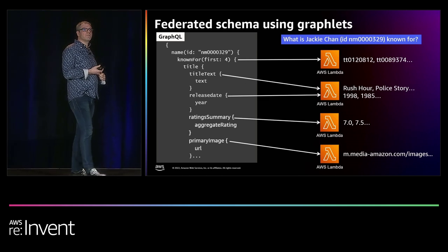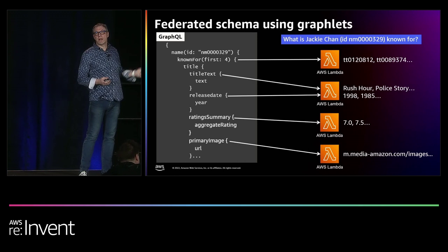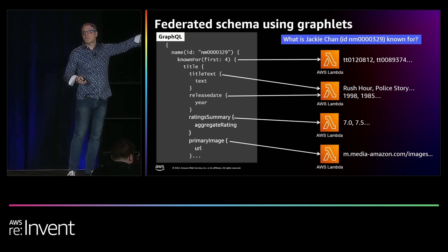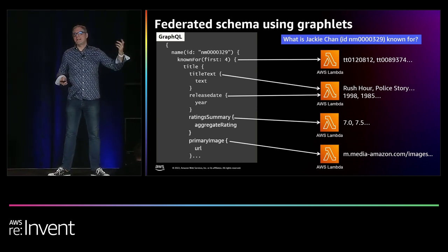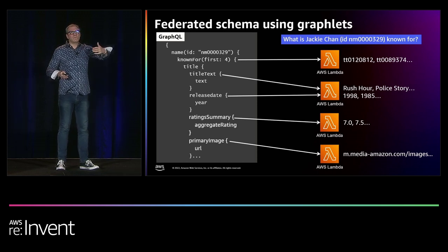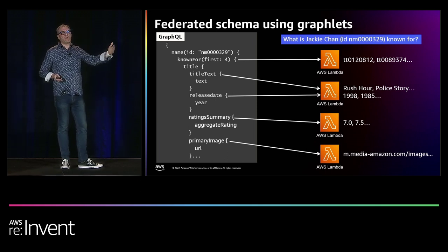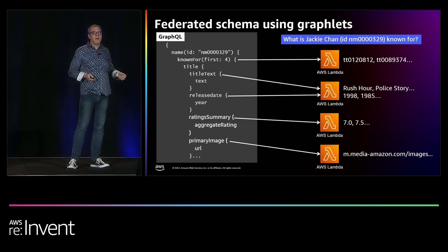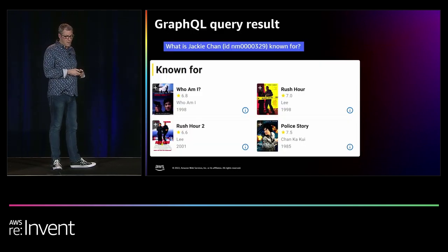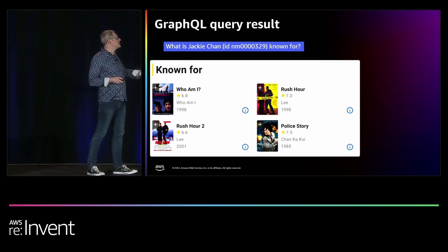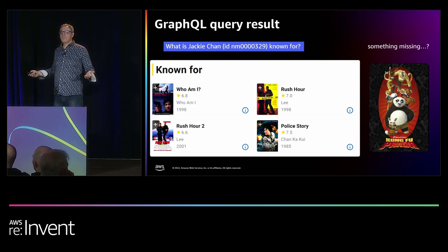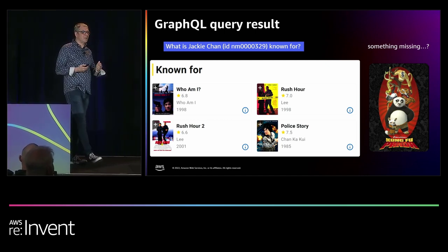This is where microservices and the federated schema come into play. The request is sent to four different microservices, each fronted by an AWS Lambda. The first finds the top four things Jackie Chan is known for and returns their IDs. The second handles title text and release date metadata. The third handles ratings only. The fourth handles image URLs only. The reason it's a federated schema is that even though the request is one big schema, each microservice only knows its own piece of the schema. The frontend then renders Jackie Chan and the four things he's known for — release dates, ratings, and images.